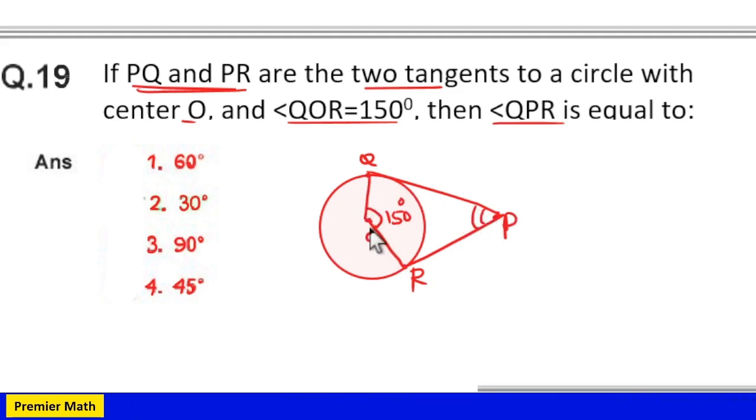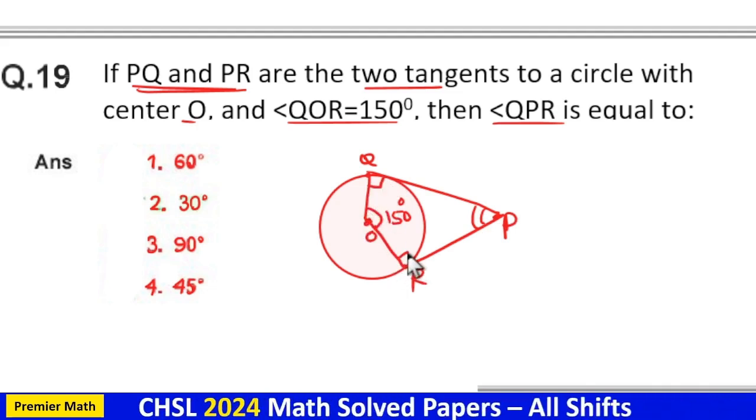These two are radius. So radius makes 90 degrees with the tangents.